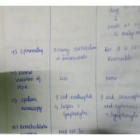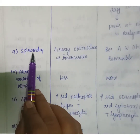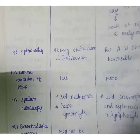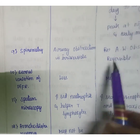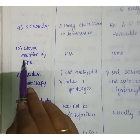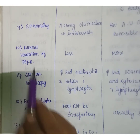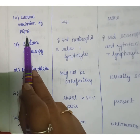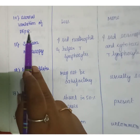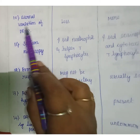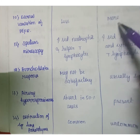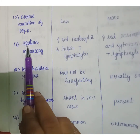In spirometry, COPD shows irreversible airway obstruction, while in asthma the airway obstruction is reversible. For diurnal variation of PEFR — peak expiratory flow rate, a pulmonary function test — in COPD it is less, and in asthma it is more.